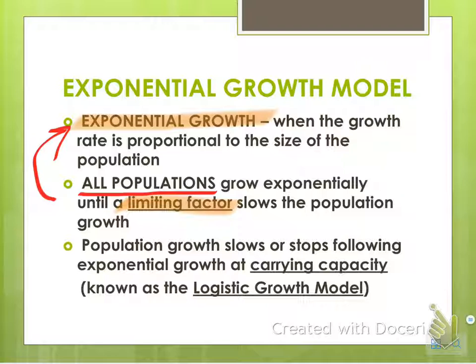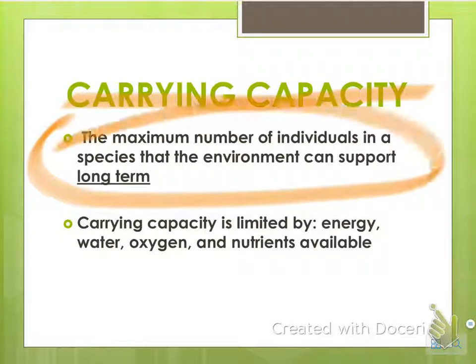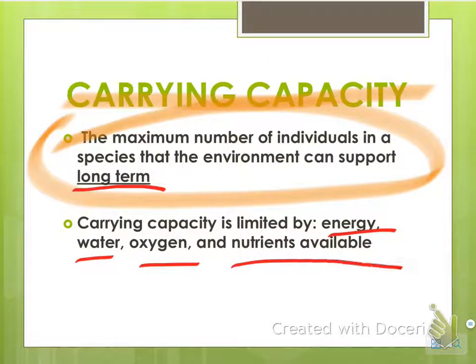Population growth slows or stops following exponential growth when it hits carrying capacity, and this overall pattern is called the logistic growth model. Carrying capacity is the maximum number of individuals of a species that the environment can support long term — not just for a week or two, but support them to live and reproduce. Carrying capacity is limited by factors like energy, water, oxygen, and available nutrients.